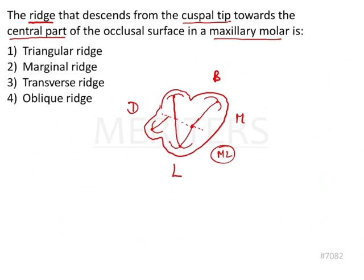Now all these elevations seen on the cusp, starting from the cusp tip reaching to the center of the tooth or the occlusal surface, divide the tooth into two triangular shapes — two sides of a triangle. So it would be two triangular surfaces, and these ridges are known as triangular ridges.